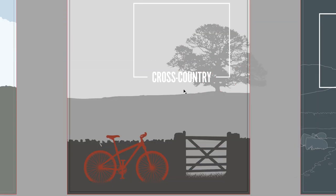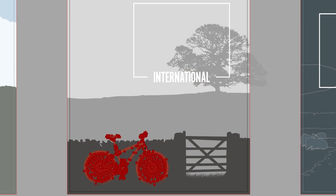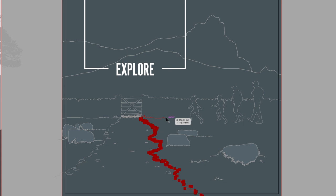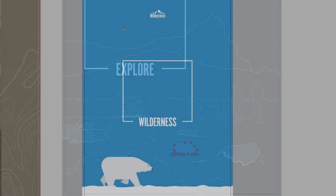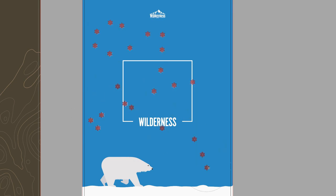The word object is a generic term used to describe anything that is a facet of your vector artwork. It could be text, it could be the shapes, it could be a logo, it could be something as simple as a line with a colour applied to it, or more sophisticated content such as brushstrokes and symbol sets. Essentially, anything that is a part of your vector project.